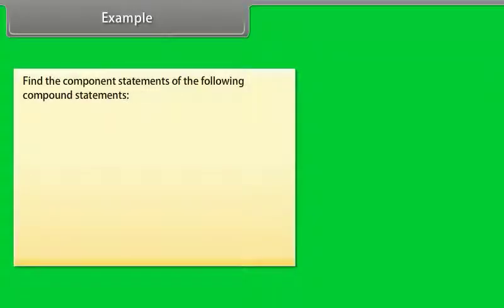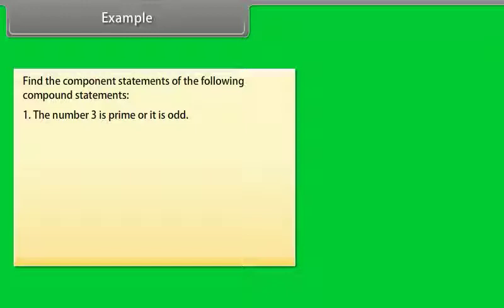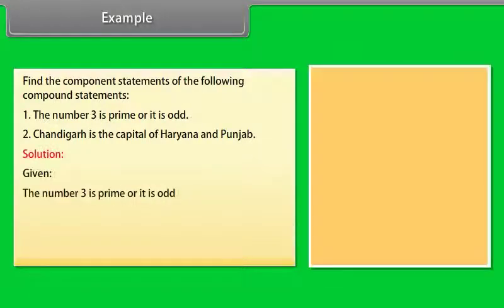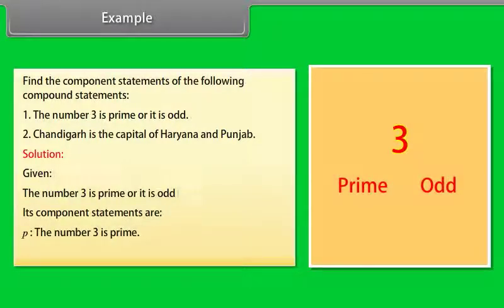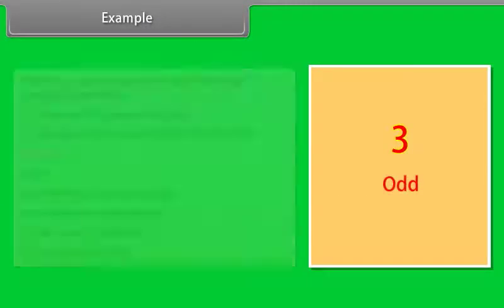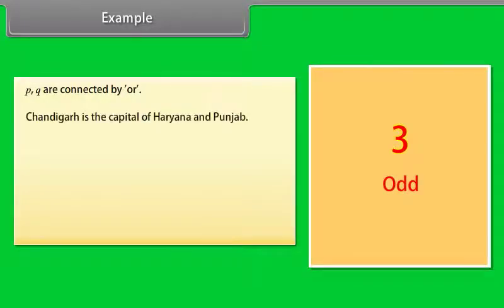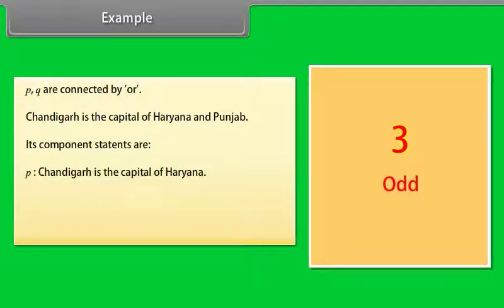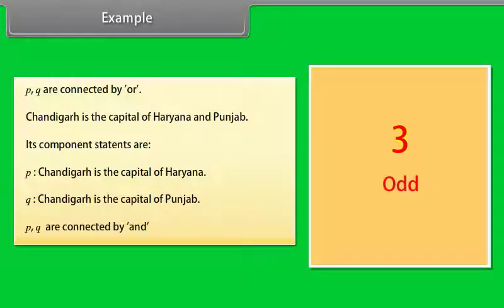Example: find the component statements of the following compound statements. (1) The number 3 is prime or it is odd. (2) Chandigarh is the capital of Haryana and Punjab. Solution: (1) Component statements are P: the number 3 is odd, and Q: the number 3 is prime. P and Q are connected by OR. (2) Component statements are P: Chandigarh is the capital of Haryana, and Q: Chandigarh is the capital of Punjab. P and Q are connected by AND.